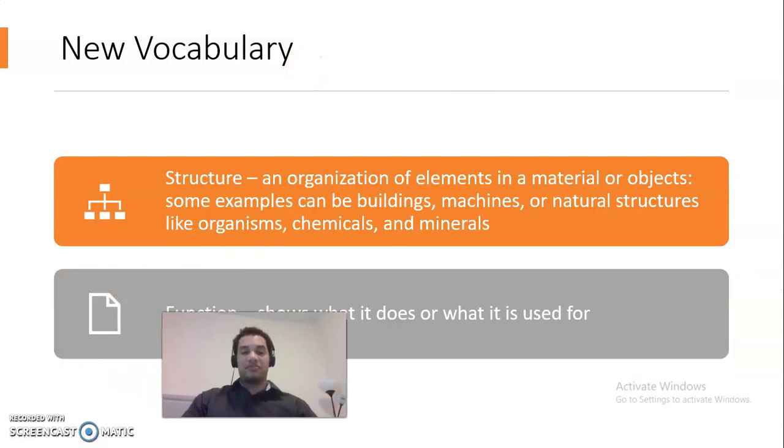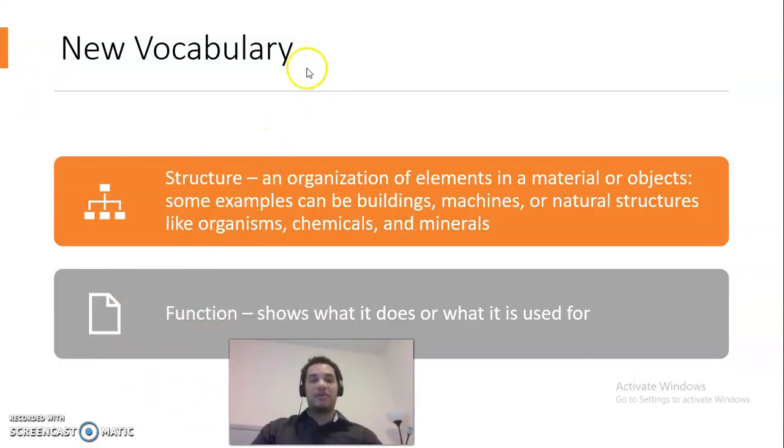Okay. So let's move further. Okay. So we have new vocabulary. Everyone say new vocabulary. So we got more new vocabulary words. So this one is called structure. Everyone say structure. Hard word, right? Structure. Let's begin. So a structure is an organization of elements in a material or objects. Some examples can be buildings. So like buildings, machines, or natural structures like organisms, chemicals, and minerals. We're going to explain that maybe in the next lesson, maybe later on. Okay. Function. So a function shows what it does or what it is used for. So that's what a function is. So again, function shows what it does or what it is used for.